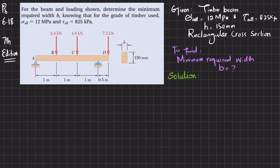If we remove the support at point A, there will be a reaction force Ra, and if we remove the support at point D, there will be a reaction force Rd. We will find Ra and Rd using the equations of equilibrium.